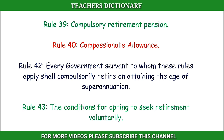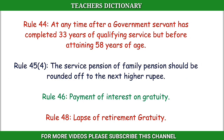Rule 42: Every government servant to whom these rules apply shall compulsorily retire on attaining the age of superannuation. Rule 43: The conditions for opting to seek retirement voluntarily. Rule 44: At any time after a government servant has completed 33 years of qualifying service but before attaining 58 years of age.